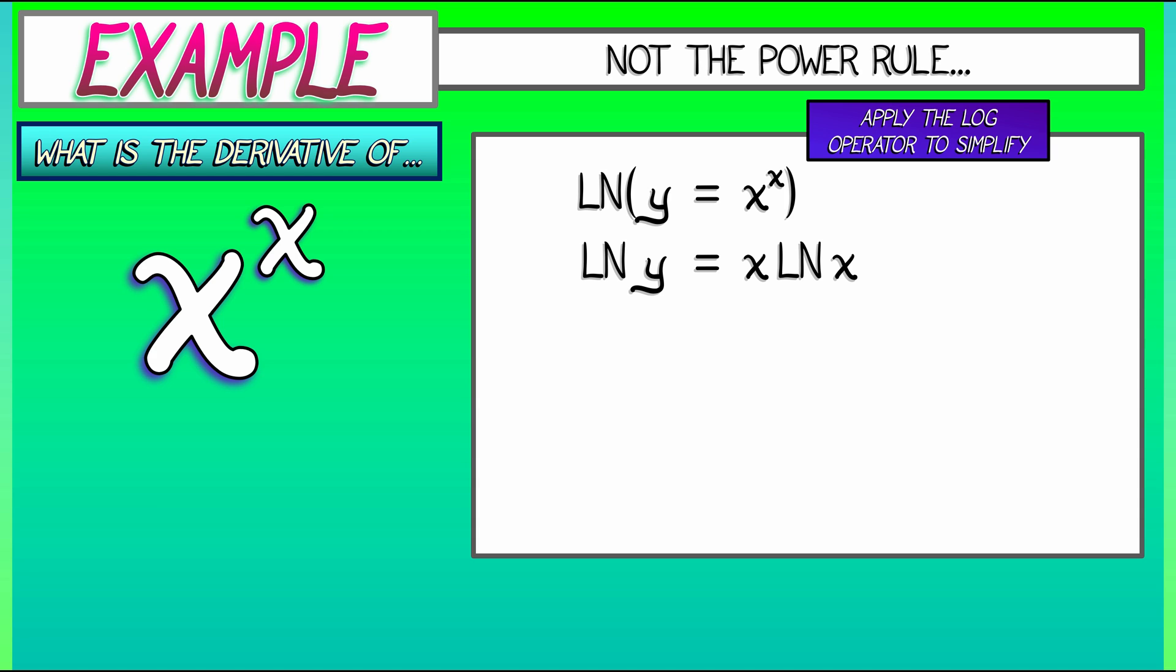Now we're at a place where we can differentiate that function on the right-hand side. So let's apply the implicit differentiation operator to this equation. On the left, the derivative of log of y is dy over y. On the right, via the product rule, the derivative of x times log of x is dx times log of x plus x times the derivative of log x. That's dx over x.